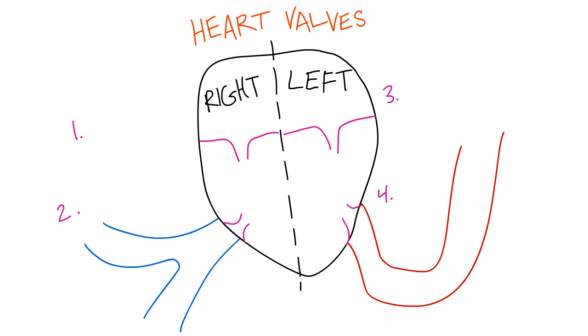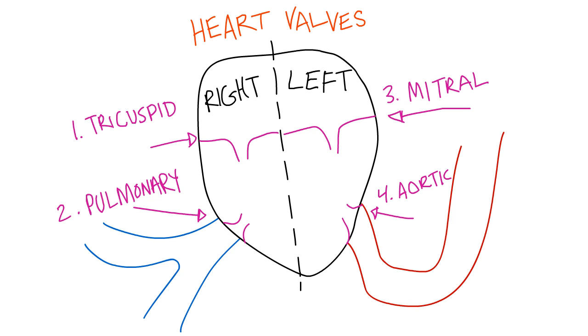There are four heart valves. The tricuspid and the pulmonary valves are on the right side of the heart, and the mitral and aortic valves are on the left side of the heart.